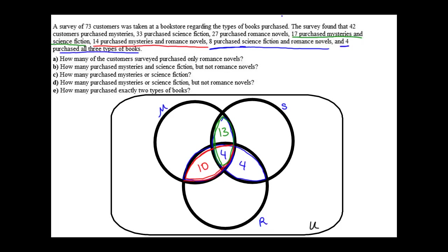Then we're going to go to these outer sections. The survey found 42 customers purchased mysteries, so the entire circle I'm circling in yellow needs to have a total of 42. I take the sum of these three, which is 27, and then 42 minus 27 gives me 15 for this outer region.